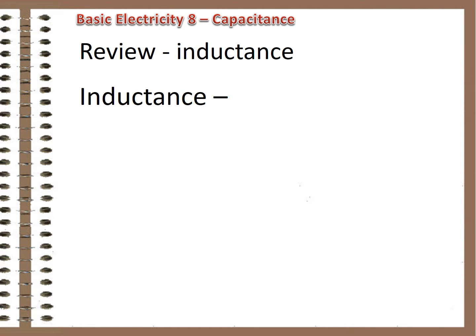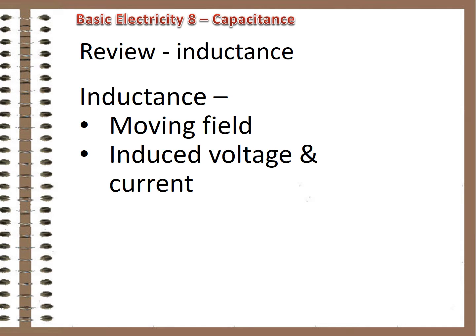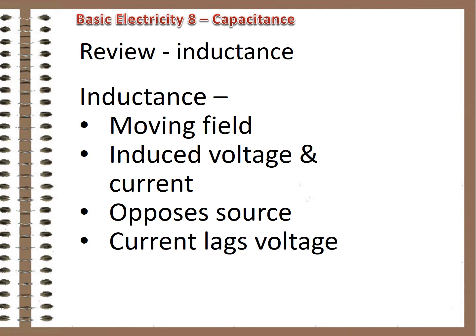Here's a quick review of these two facets of the AC power system. Inductance comes from the moving magnetic field around AC conductors. The field induces voltage and current flow in the circuit that opposes the source and delays current change. In an inductive circuit, the change in current lags the change in voltage.